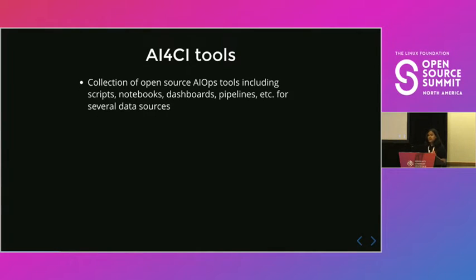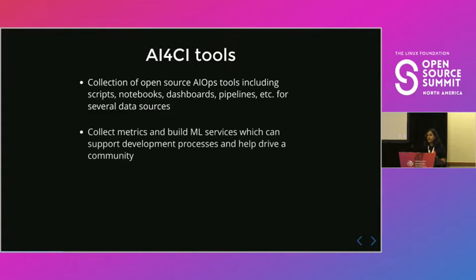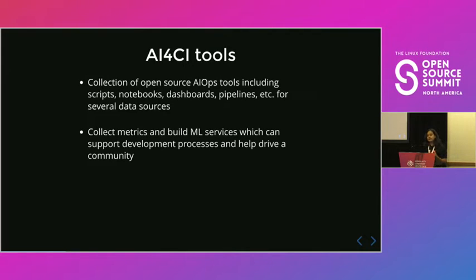That brings us to our project AI4CI and the whole toolkit. This project is a collection of open source tools that include scripts, notebooks, dashboards, different metrics and data sources. We collect data from various CI/CD data sources that also include GitHub repositories. We display the metrics on dashboards and also build ML services and tools like the ones discussed earlier which can help with a project's development process. We'll shortly go over one of the ML services — the time-to-merge prediction model — and discuss the ML workflow we followed.